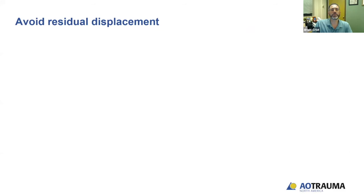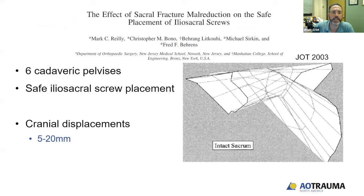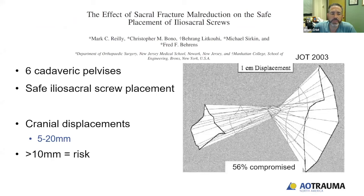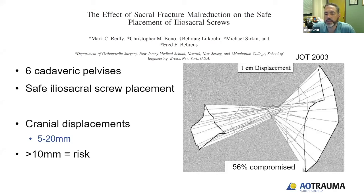It is important to avoid residual displacement because it can affect your ability to safely place hardware. One of our chairs, Dr. Riley, published a paper using six cadaveric pelvises looking at safe iliosacral screw placement based on displacement through the sacrum. They varied displacement between 5 and 20 millimeters. At 10 millimeters or greater, there was an increased risk of unsafe iliosacral screw placement — with one centimeter of displacement, 56% of placements would be compromised.